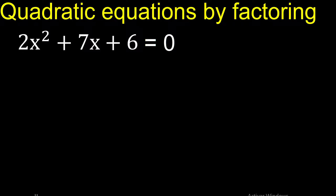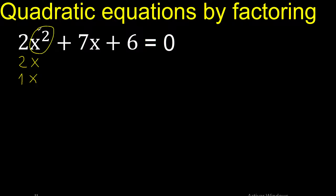Two numbers that multiply to 2: 2 multiplied by 1 is 2, and x multiplied by x is x squared.